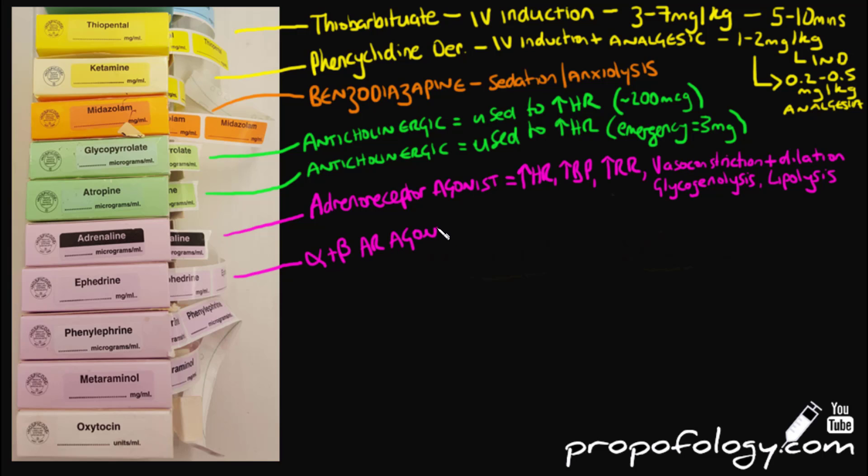Ephedrine is an alpha and beta agonist. Basically what it does is it's an indirect sympathomimetic, i.e., it causes release of noradrenaline from nerve terminals. It will also have a directly stimulating effect on the alpha and beta receptors. Ephedrine causes an increase in heart rate, cardiac output, blood pressure, coronary artery blood flow, and increased myocardial oxygen consumption. It also facilitates bronchodilation and increases your respiratory rate.